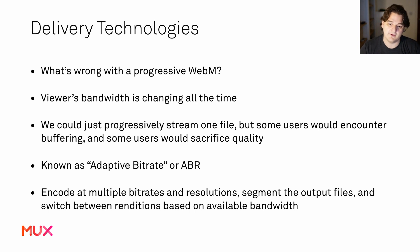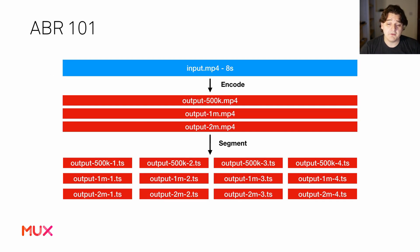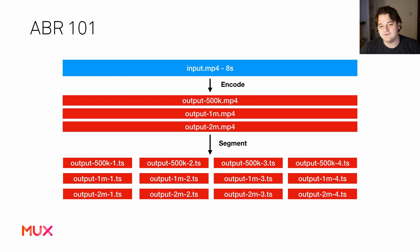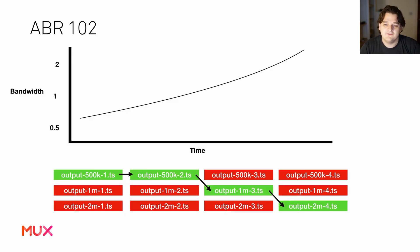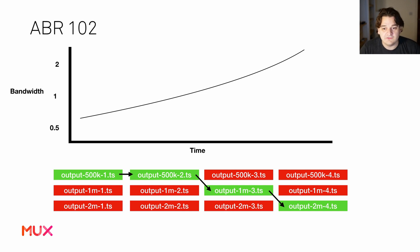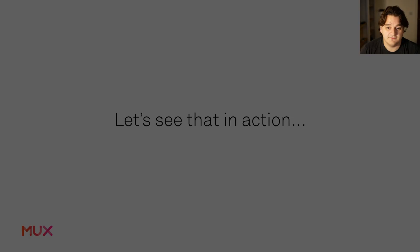Some users will encounter buffering, and some will sacrifice quality. This is a solved problem in the video industry, called adaptive bitrate. Here's how it works: you take an input file and encode it to different renditions or representations — for example, 0.5 megabit, 1 megabit, and 2 megabit. Then you segment those files into smaller chunks, say 2 seconds each. Every couple of seconds the player downloads a new segment and looks at the last download to decide which rendition to request next, optimizing quality for available bandwidth.